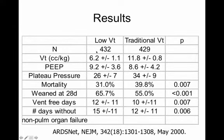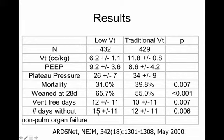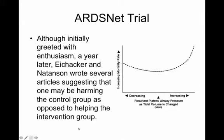The ARDSnet results: 800 patients, low tidal volume group achieved 6 cc/kg, traditional group 12 cc/kg. PEEP wasn't very different between groups, but plateau pressures were. Mortality showed a big difference: 31% versus 39%. More patients weaned, more ventilator-free days. So it seemed like we finally had the answer.